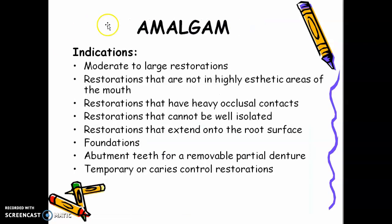Supplementary lesson — indications for amalgam: moderate to large restorations, because amalgam is stronger when placed in bulk; restorations not in highly aesthetic areas of the mouth; restorations with heavy occlusal contacts; restorations that cannot be well isolated, as amalgam is moisture tolerant; restorations that extend onto the root surface; foundations for jacket crowns; abutment teeth for removable partial dentures; and temporary or caries control restorations.